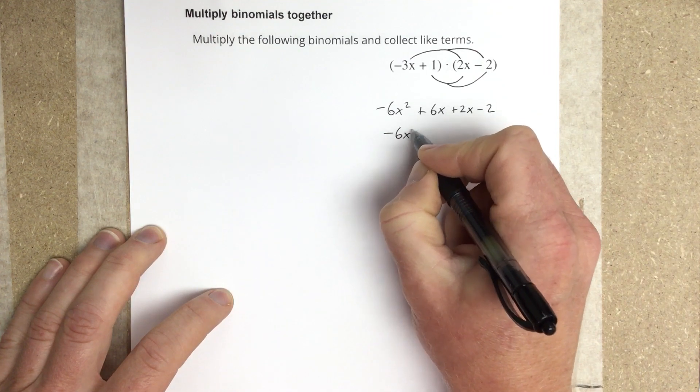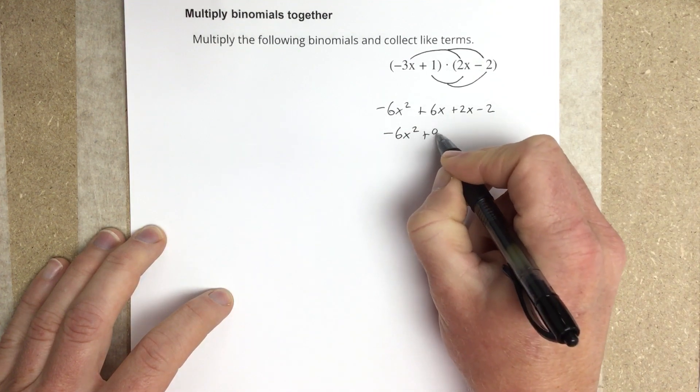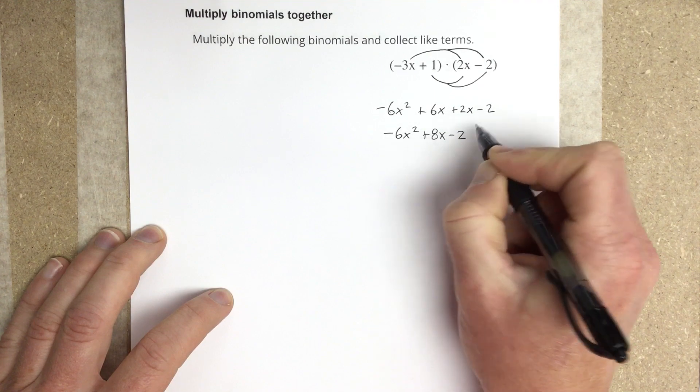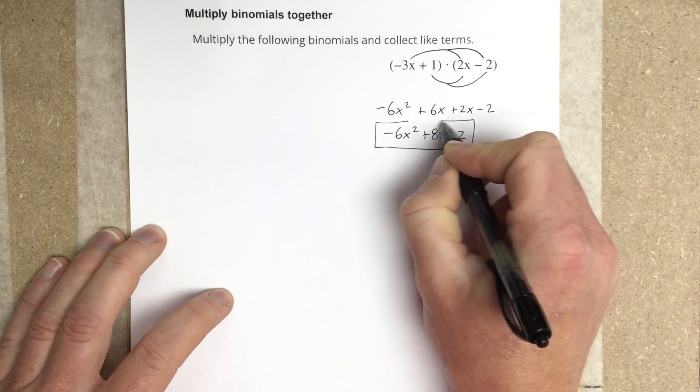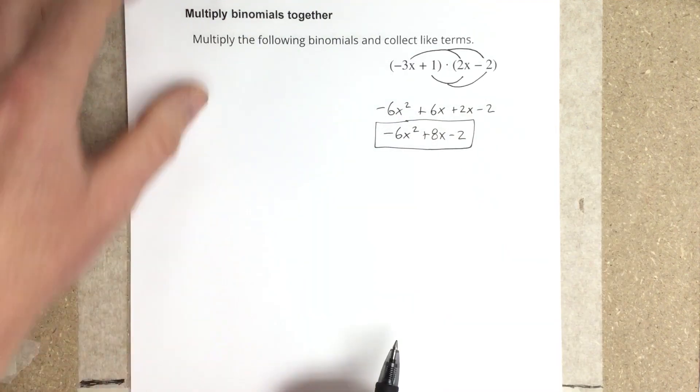So we end up with negative 6x squared plus 8x minus 2. And that's how you multiply the two binomials.